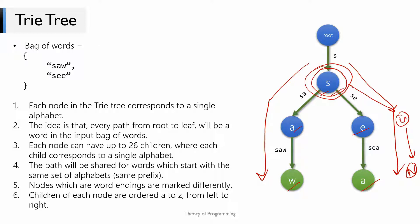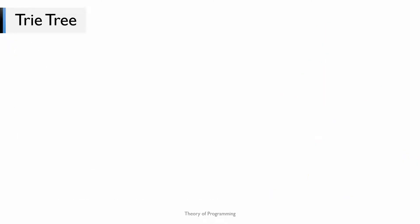Nodes which are word endings are marked differently — in our example the last node W of 'saw' and the last node A of 'see' are marked in green. This is done so that programmatically we can differentiate a word-ending node from a non-word-ending node. Children of each node are ordered from A to Z left to right. These are not golden rules; I've put them up so you have a starting point to draw a Trie tree yourself.